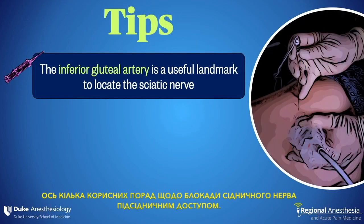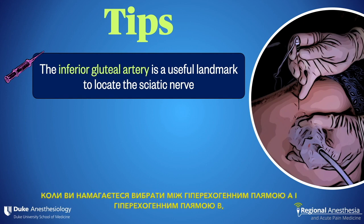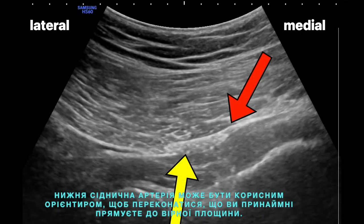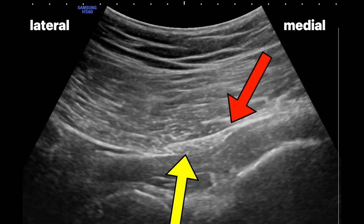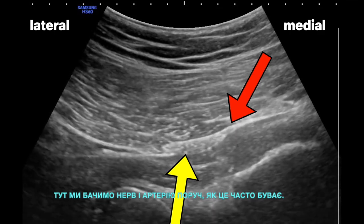Here are some tips for the subgluteal sciatic nerve block. First, it's great when everything looks amazing on the screen, but that's not going to happen every time. When you're trying to decide between hyperechoic smudge A and hyperechoic smudge B, the inferior gluteal artery can be a useful landmark to ensure that you're at least aiming for the right plane. Here we see the nerve and the artery side by side, as is often the case.